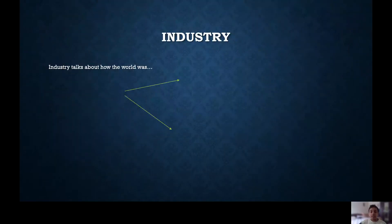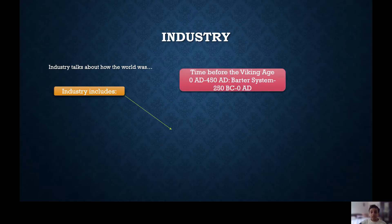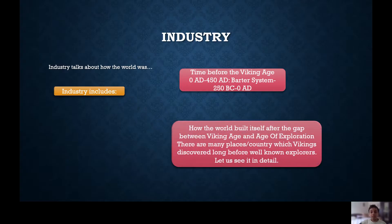Industry talks about how the world was. Industry includes the time before the Viking Age, 0 AD to 450 AD, the Barter System from 250 BC to 0 AD, and how the world built itself after the gap between the Viking Age and the Age of Exploration. There are many places and countries which Vikings discovered long before well-known explorers.